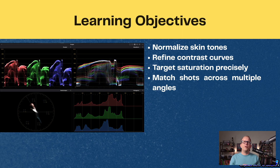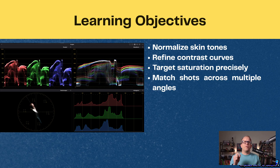These are all referred to as secondary corrections. We've spoken about primary corrections already, now we're moving on to secondary corrections. They take place after you've performed those primary corrections: normalizing skin tones, refining contrast curves, targeting saturation precisely, and then matching shots across multiple angles.